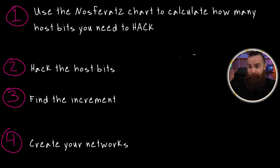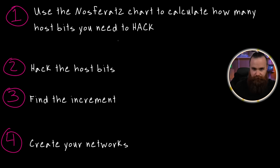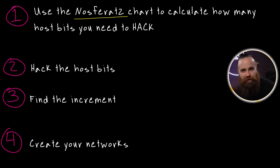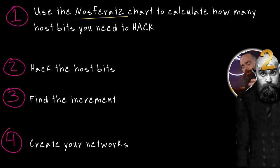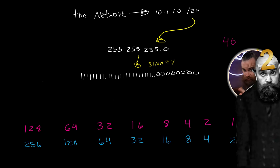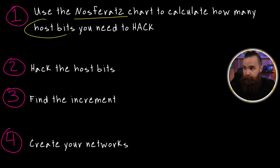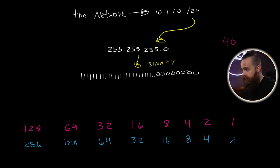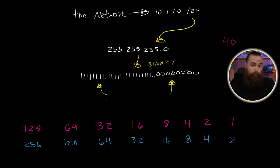This right here is our subnet mask in binary. Now that we have our subnet mask in the matrix code that computers love, we can allocate our steps to subnet based on host requirements. This might look familiar because it's almost identical to subnetting based on network requirements with one key change. The first thing is we want to use Nosferatu's brother — Nosferatu's chart is exactly like Nosferatu's chart, except it's double. Each number is times two — simple but powerful.